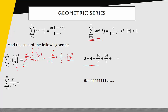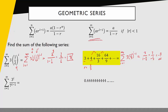Next, I have a series in expanded form. I check if it's geometric by dividing consecutive terms: 4 divided by 3 is 4 thirds. Does multiplying by 4 thirds get me to each next term? Yes. So it's geometric and I write it in sigma notation with a equals 3 and r equals 4 thirds. If I blindly apply the formula I get 3 over 1 minus 4 thirds, which gives negative 9. But that can't be right — I'm summing positive values. The problem is I applied the formula when it doesn't apply: the absolute value of r must be less than 1. Here r equals 4 thirds, which is too big, so this series does not converge.